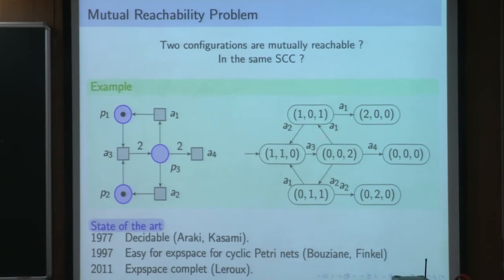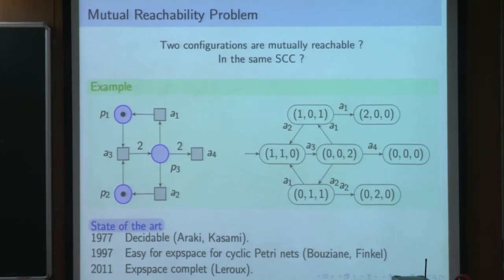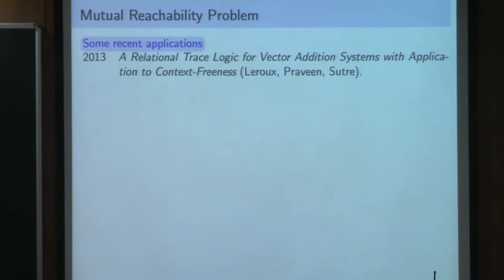But it cannot be applied on this general kind of Petri Net. And in Concur, I proved that in fact the mutual reachability problem in general is exponential space complete. The idea is to prove that if two configurations are mutually reachable, there exist short runs that provide a witness of reachability. This mutual reachability result was used in several applications for Petri Nets, but also for other models.